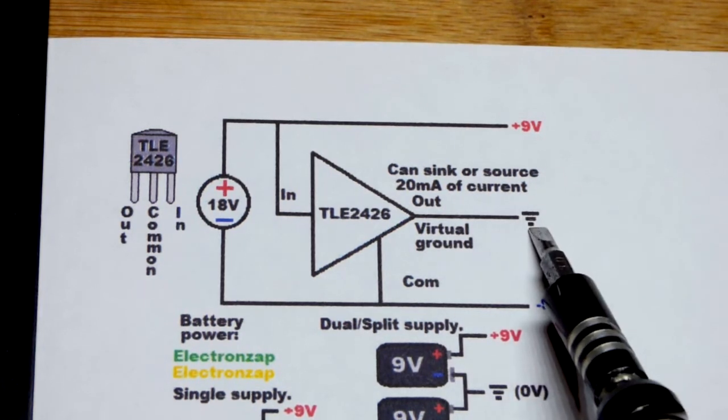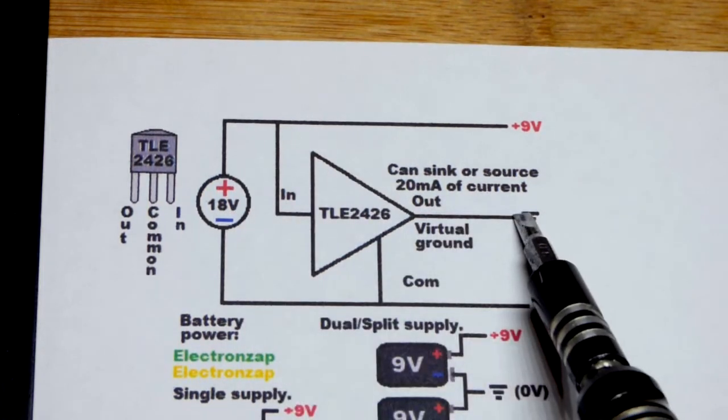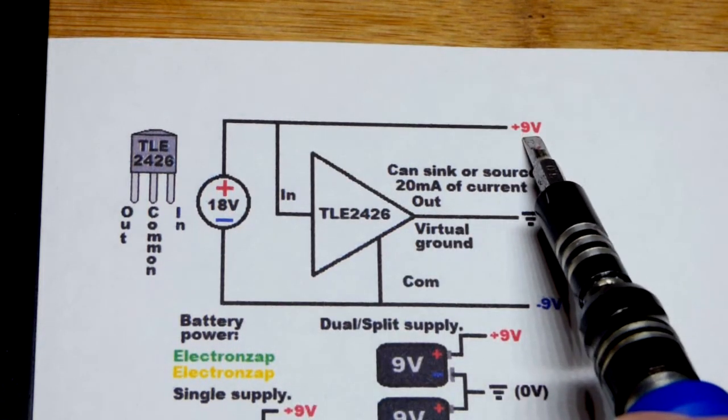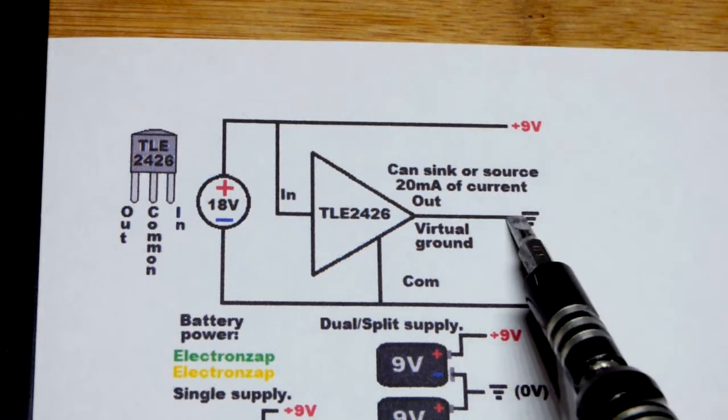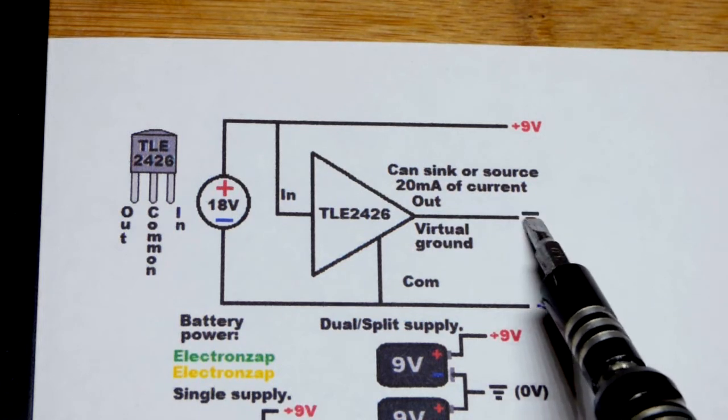So the point of that, you declare that ground now. And so if you got an 18 volt power supply, then you have positive 9 volts in relationship to ground as well as negative 9 volts in relationship to ground.